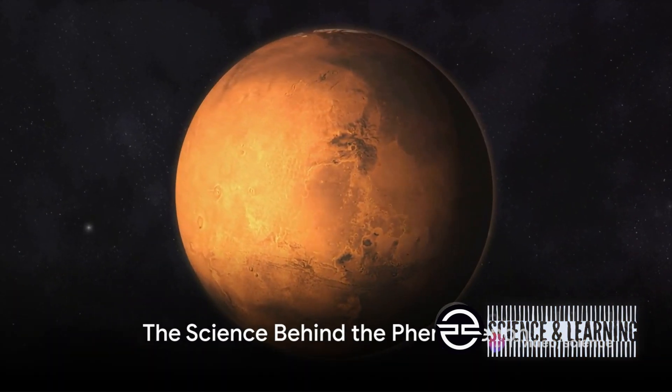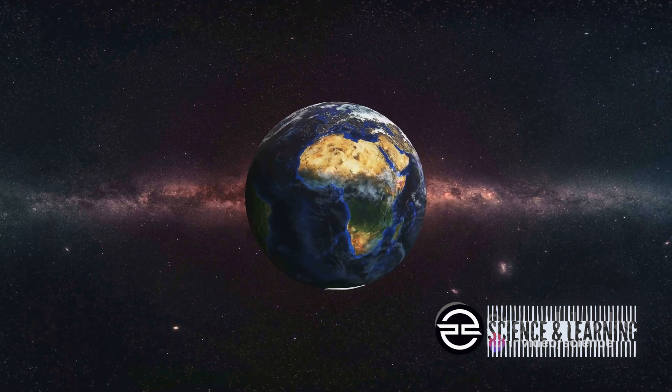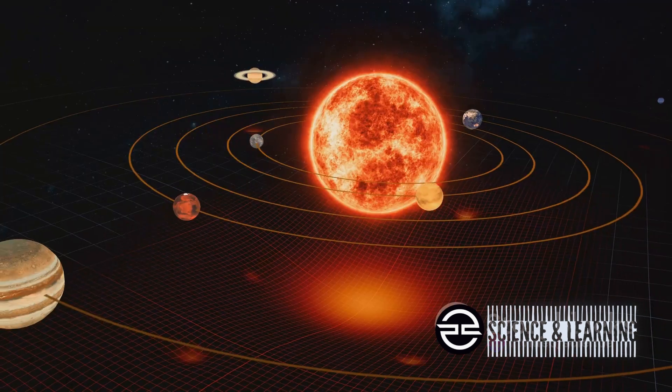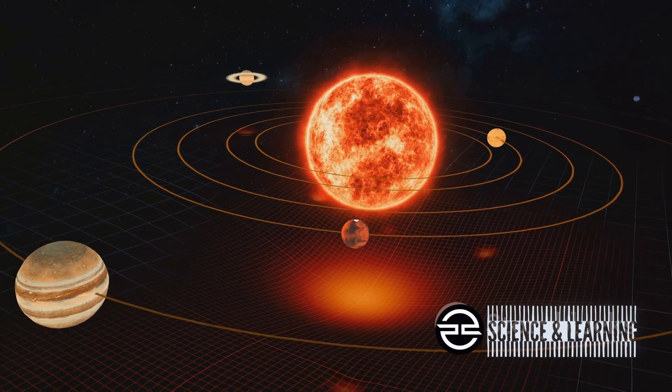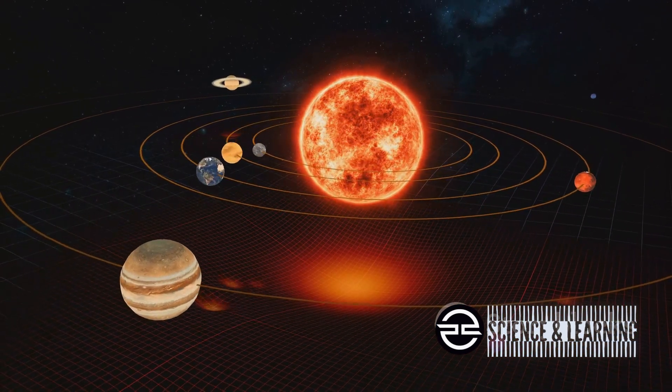Imagine a celestial waltz, where Earth and Mars dance around the sun. This dance, however, isn't just for show. It's a cosmic ballet, choreographed by the laws of physics, and it's got some surprising effects on our home planet.